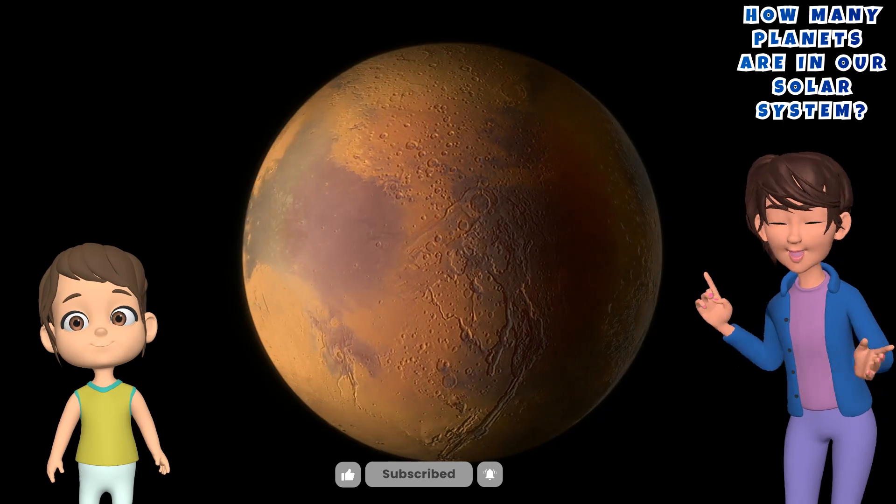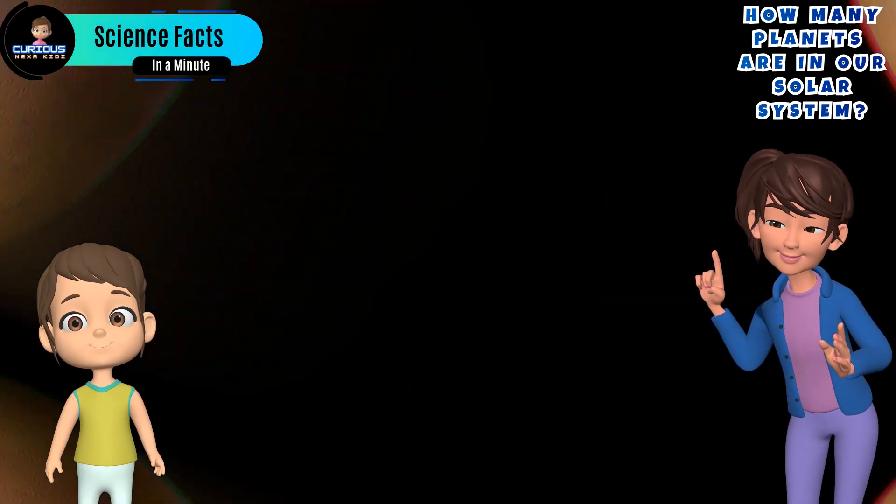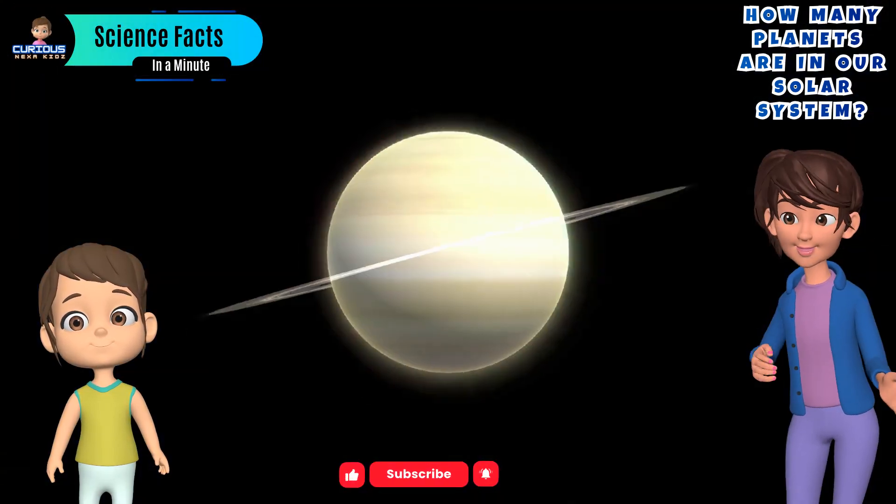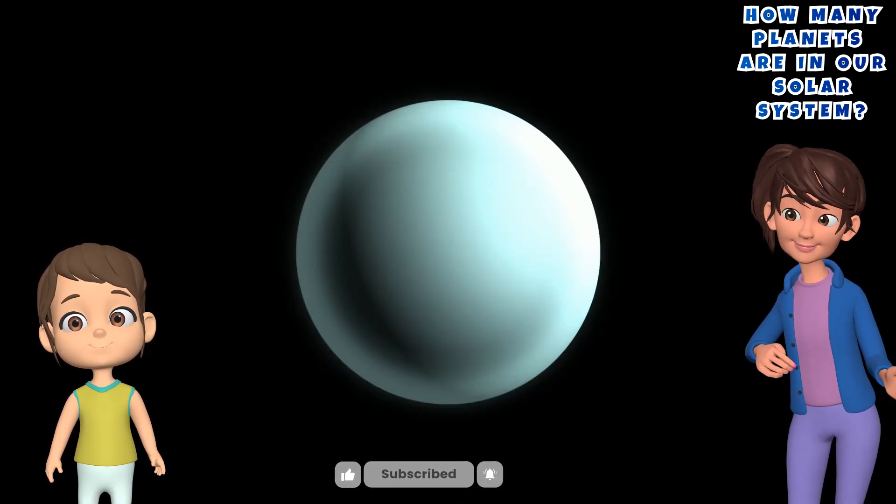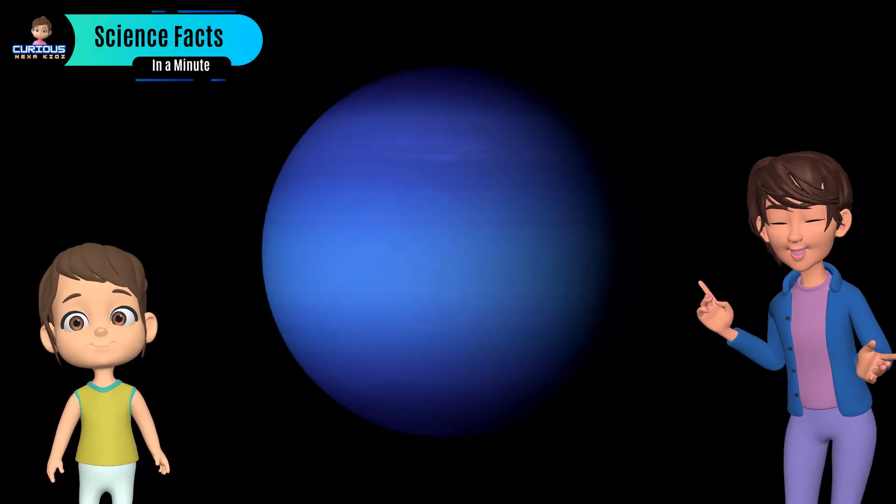Further out, we find the giant gas planets: Jupiter, the largest, Saturn, famous for its beautiful rings, Uranus, which spins on its side, and Neptune, known for its deep blue color.